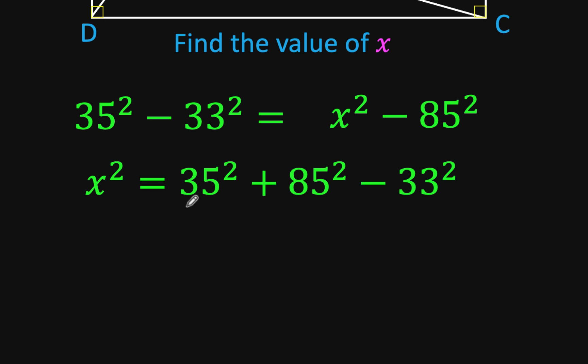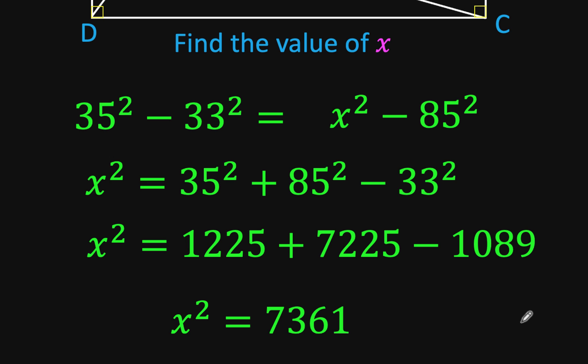So solving now for X squared. X squared is equal to 35 squared plus 85 squared minus 33 squared. And from the symmetric property of equality, we interchange the left and the right side of the equation. So 35 squared is 1,225. 85 squared is 7,225. And 33 squared is 1,089. Performing the arithmetic computation, we have X squared equals 7,361.